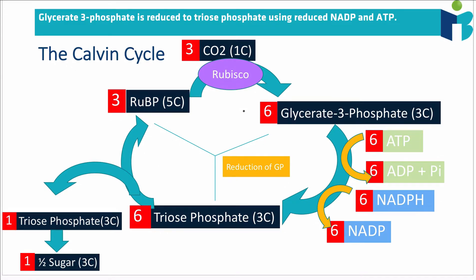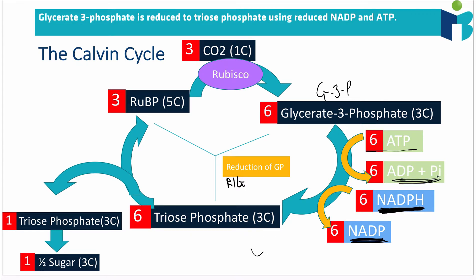The second step is what happens to glycerate 3-phosphate, also summarized as G3P in some textbooks. G3P is going to be reduced — reduction being the gain of electrons or hydrogens. This happens using the NADPH molecule formed in the light-dependent reactions: NADPH gives off an electron and hydrogen to become NADP+. There is one molecule of NADPH for every molecule of glycerate 3-phosphate, which is why we need six. ATP also hydrolyzes into ADP and inorganic phosphate to provide energy for this process.